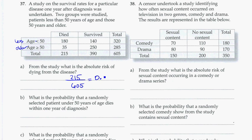And as a decimal, that's 0.3554. So again, that's the absolute risk for anybody that they die from this disease.